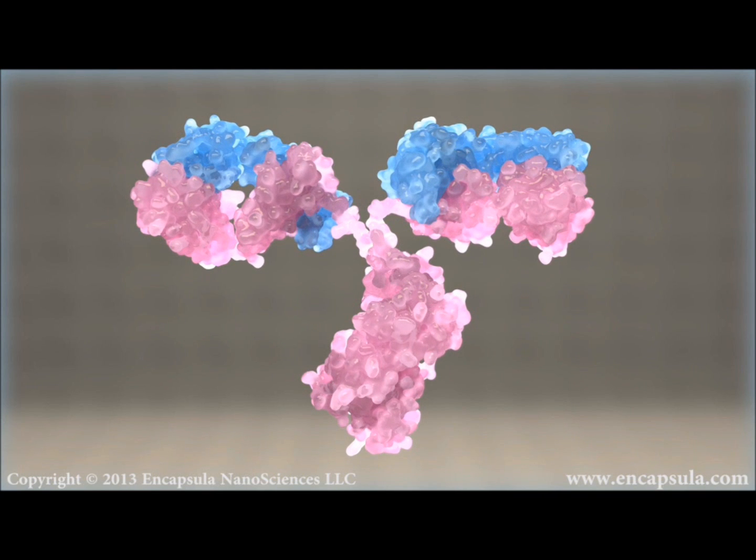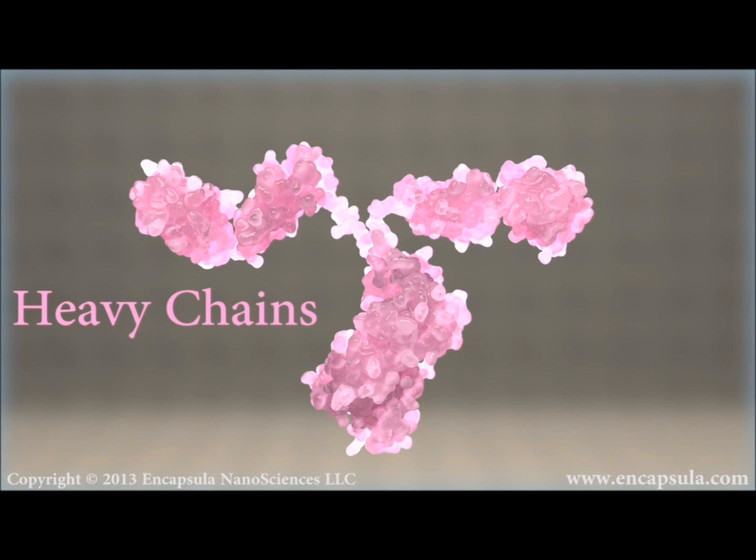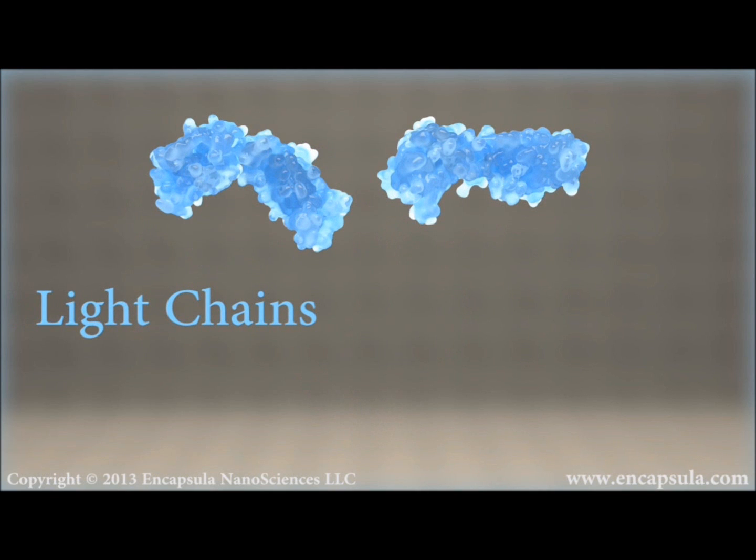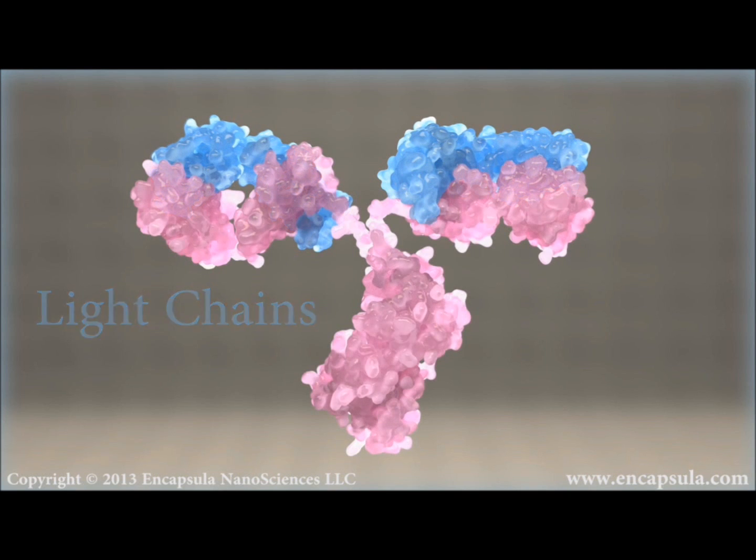Antibodies exist as a copy of a Y-shaped unit, consisting of four polypeptide chains. Each antibody is composed of two identical heavy chains and two identical light chains, distinguishable by their variation in molecular weight.